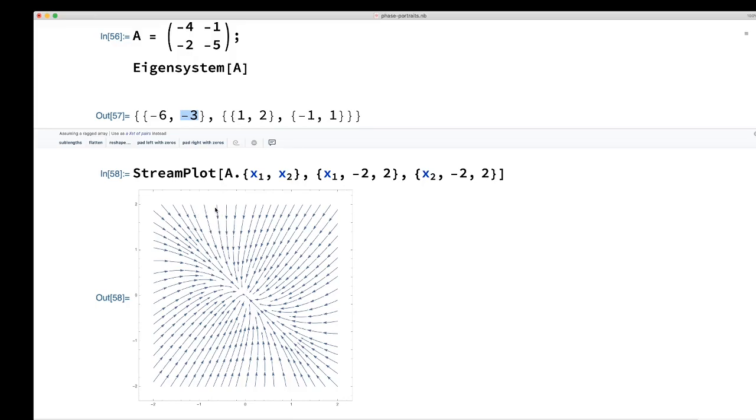So what happens is that you end up getting more parallel to this direction with the larger eigenvalue. As time evolves, the other component is decaying away faster, and the component that dominates is the one that's parallel to this eigenvector here.